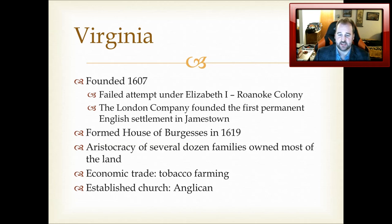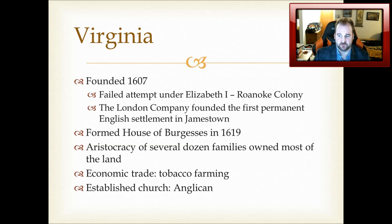In 1607, the London Company founded the first permanent English settlement in Jamestown, named after King James I, who was king at that time. The first few years were tough ones. Shortly after settling Virginia, the House of Burgesses was formed — Virginia's elective assembly and legislature of colonial Virginia — and it lasted essentially until Virginia became a state in 1776.